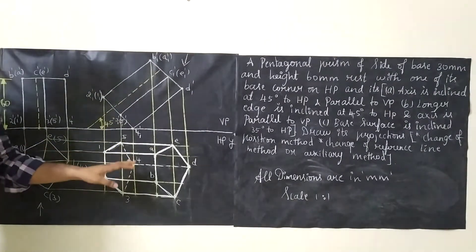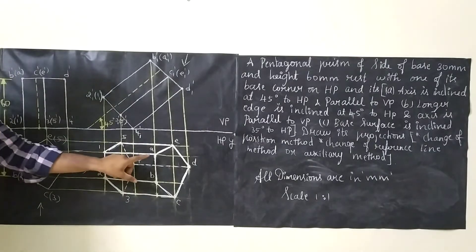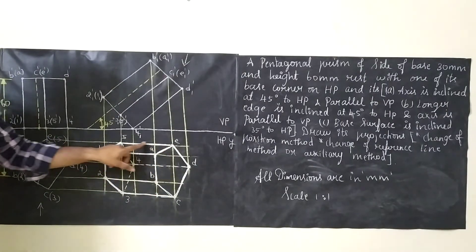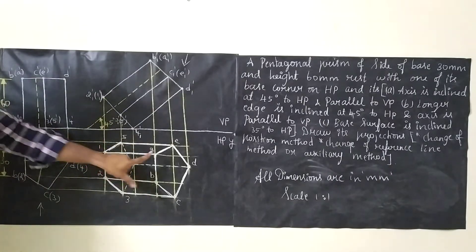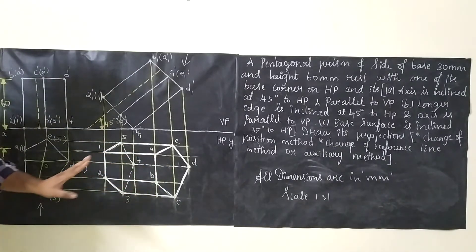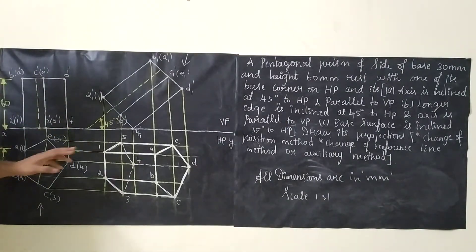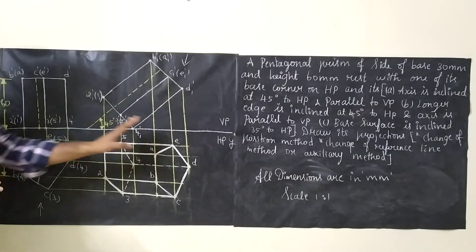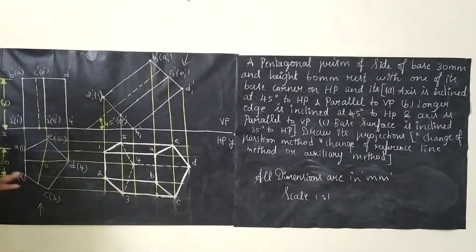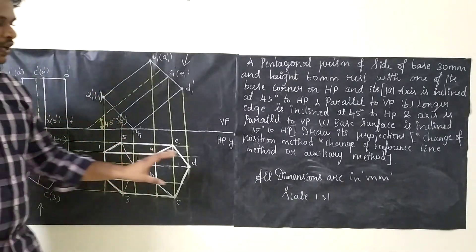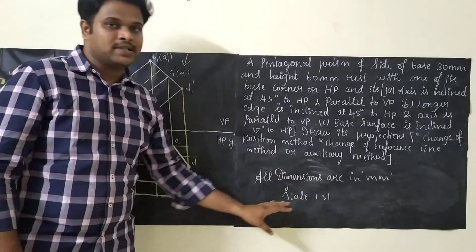After marking hidden lines, join all remaining edges to complete the diagram. Join A, B, C, D, E on the top face, then join all rectangular side faces — except the hidden edges, which are shown as dashed lines. For dimensioning, you have to dimension the height, the side length, and the angle. Finally, write the scale as 1:1.